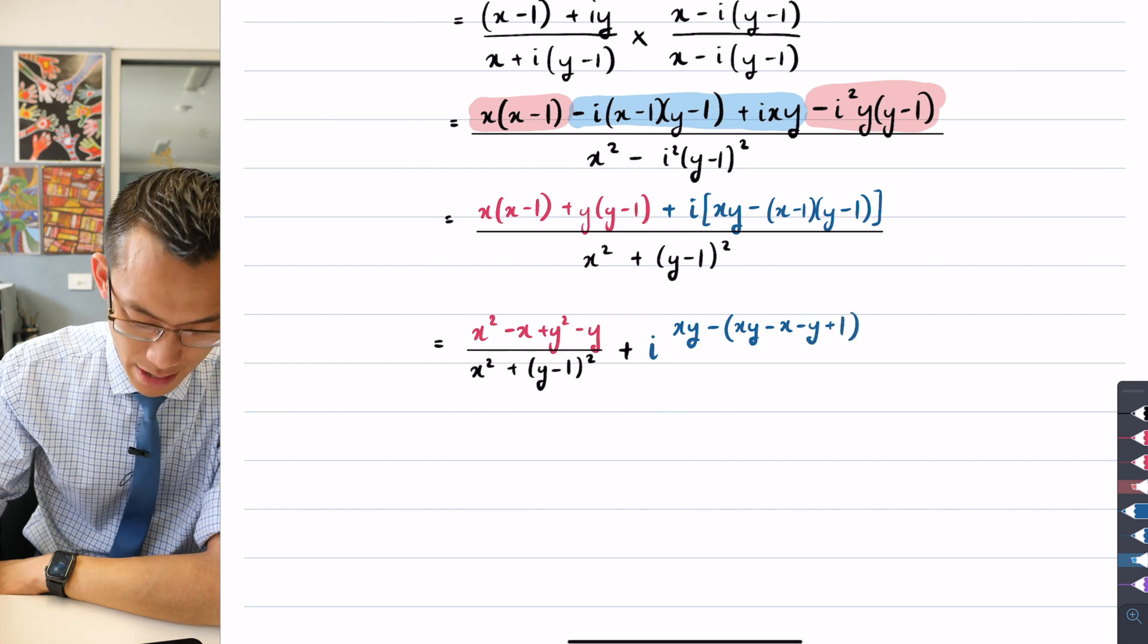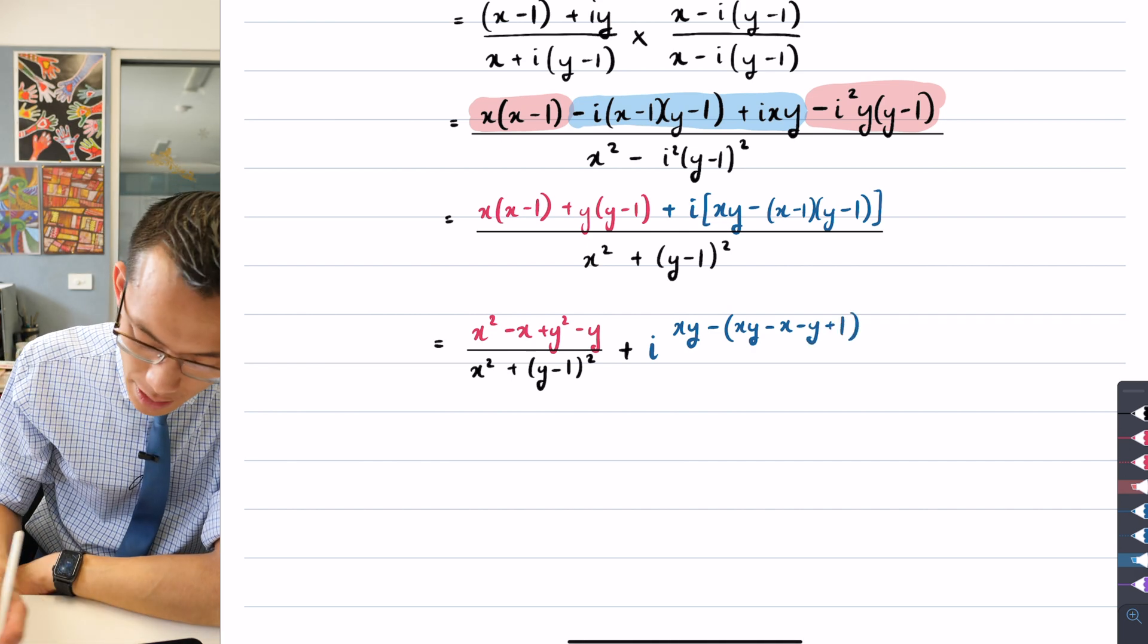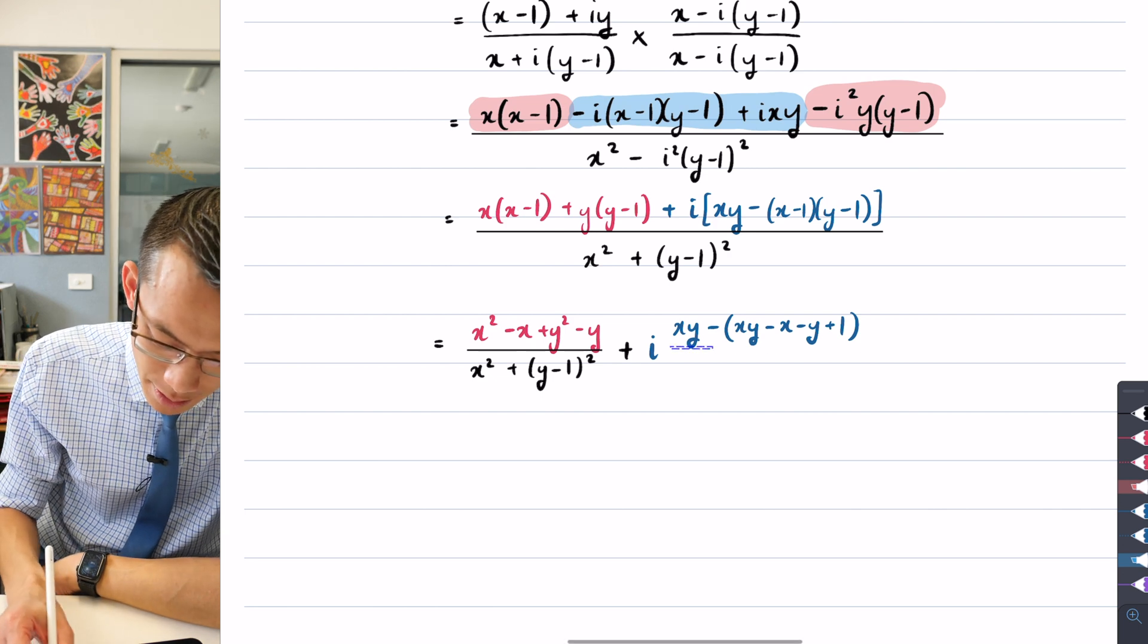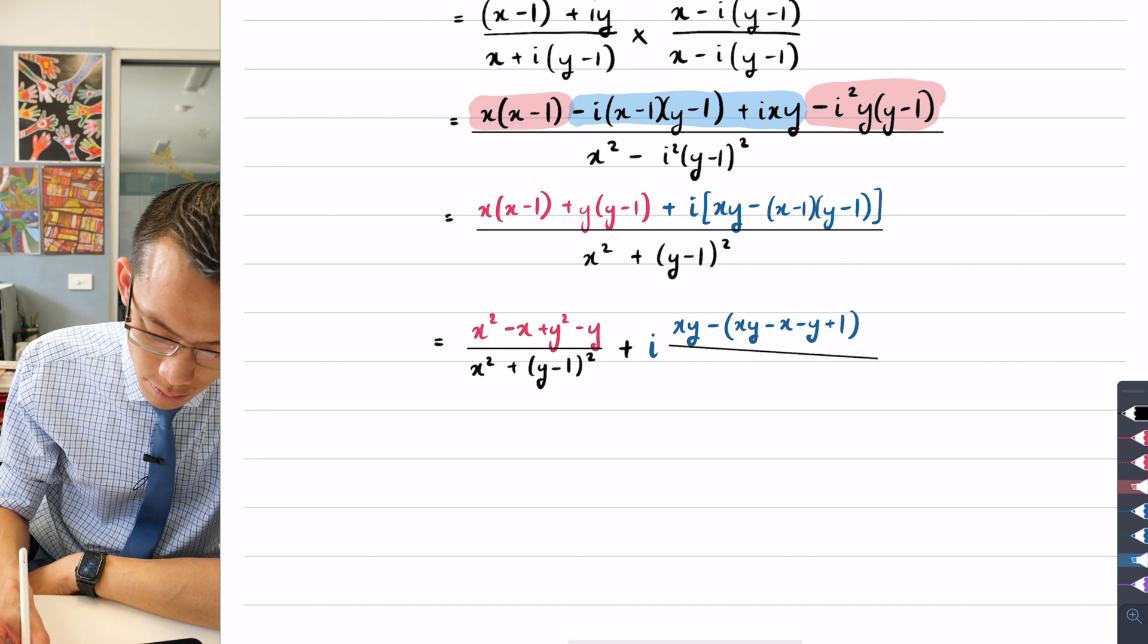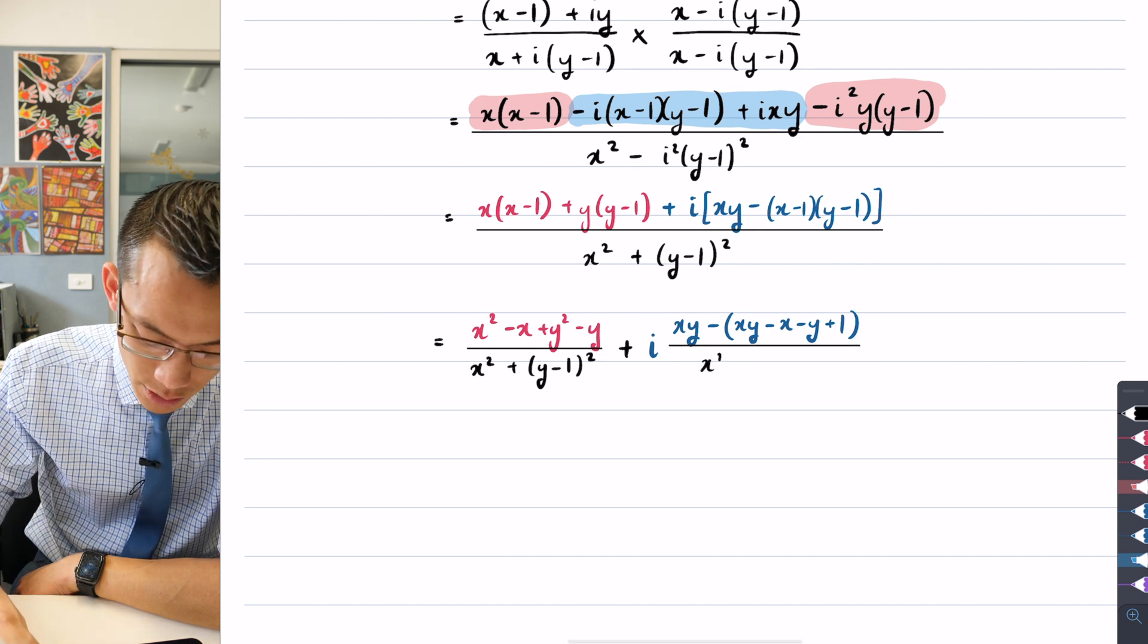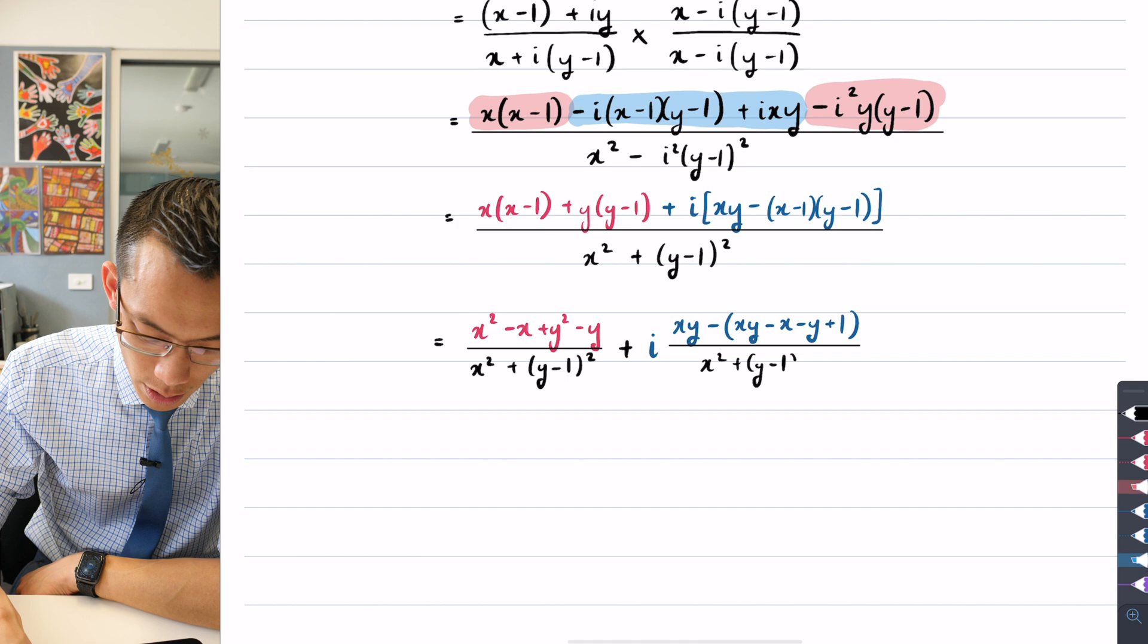Now I've got to expand this pair of binomials, so it looks to me like I get xy minus x minus y plus 1, and that is all divided by the same denominator that I saw before. So draw that fraction there, x squared plus (y - 1) squared.